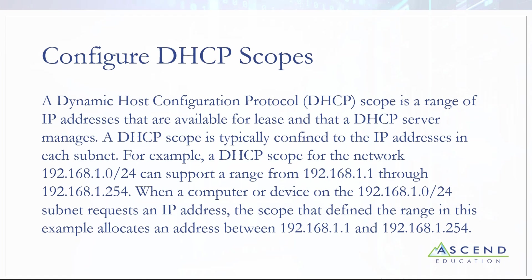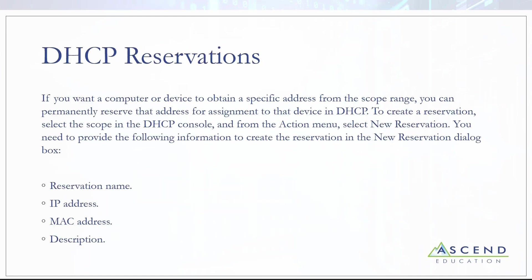DHCP uses a scope, and within the scope is the range of IP addresses called the pool, along with all your options like DNS and gateway. The scope also includes reservations and exclusions. For example, on a 192.168.1.0 slash-24 network, the usable IP addresses are 1 through 254, so you could make the full range available — the first device gets .1, the second gets .2, and so on.